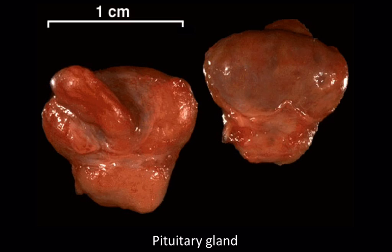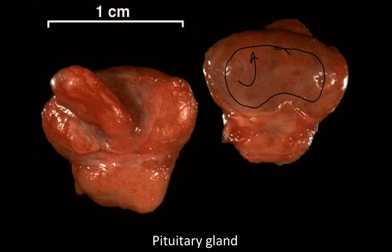The pituitary gland is a really small organ, about the size of a big pea, which is amazing considering all it does. It has two different lobes — almost like two different organs smashed together. The anterior lobe comes from oral ectoderm, from something called Rathke's pouch, which moves up into the brain. The posterior lobe is smaller, comes from neural ectoderm at the base of the developing brain, moves down to meet the anterior lobe, and both connect via a stalk leading up to the hypothalamus.